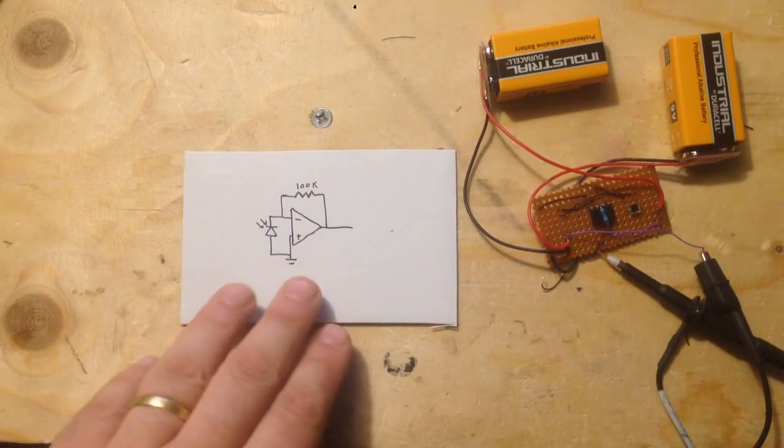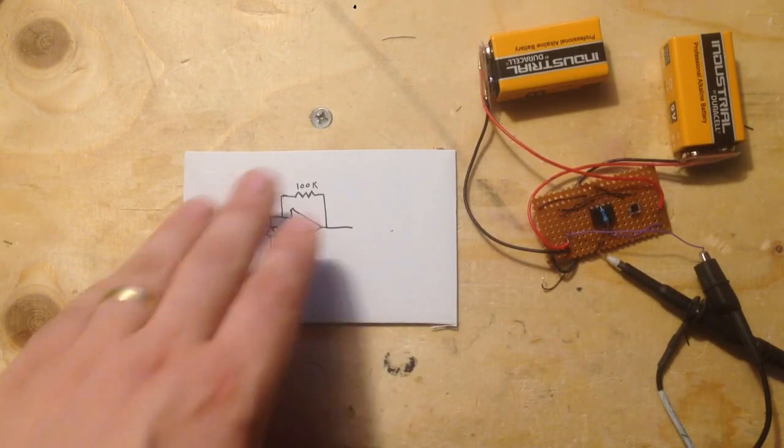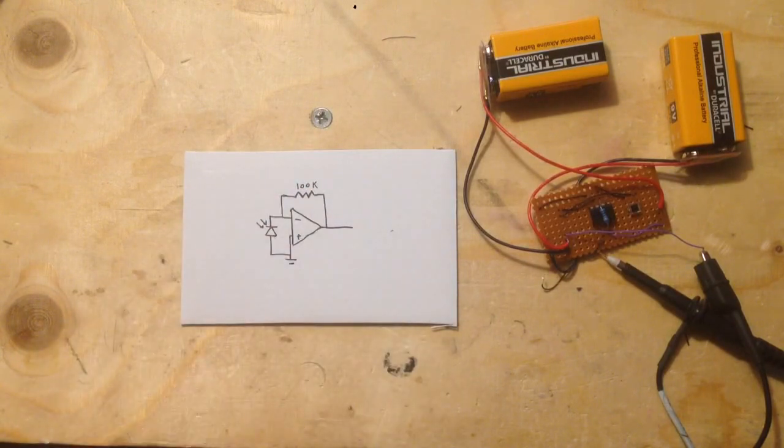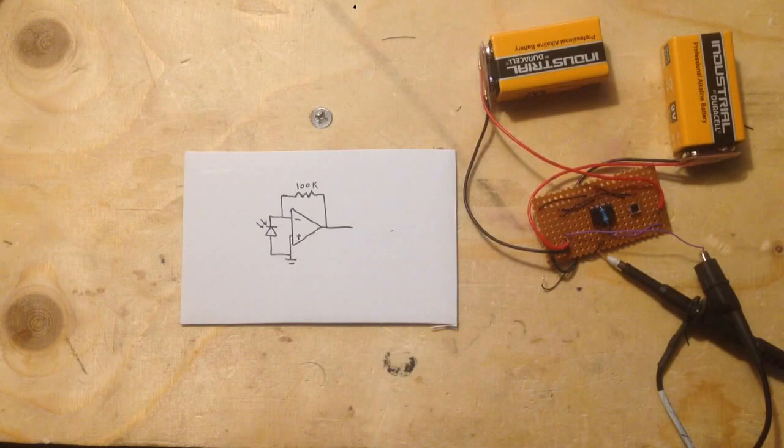The typical way of doing this is using what is called a trans-impedance amplifier to amplify these very low currents and turn them into a voltage. So they're also called current to voltage converters, and they're used for a bunch of different applications.